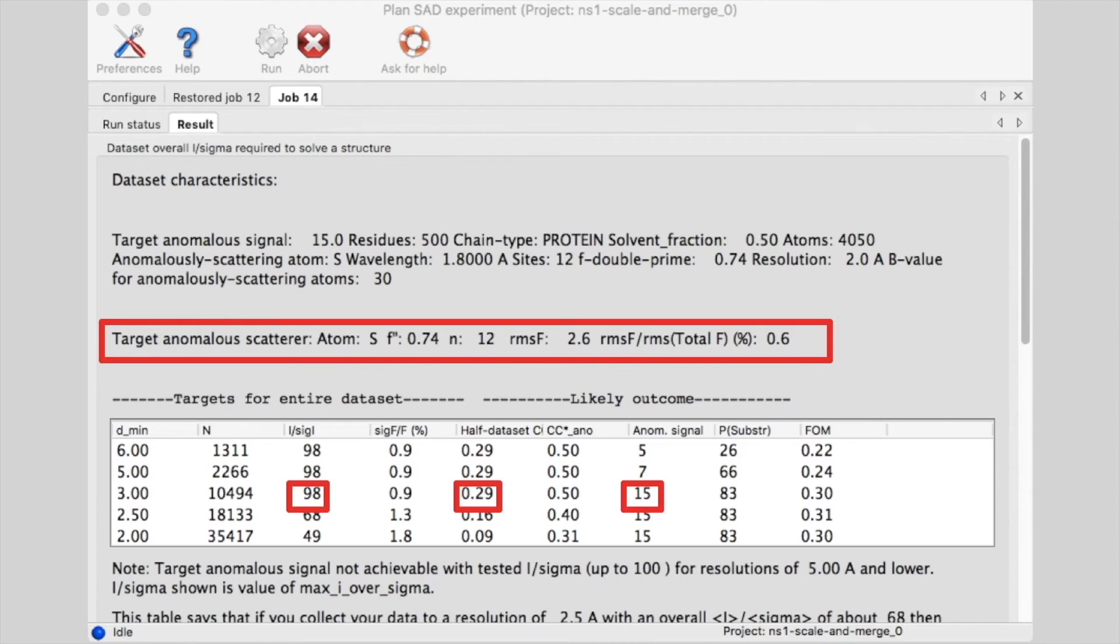Compare this with a required I over sigma of just 20 for the selenium experiment. The probability of solving the structure with this data is still 83%, and the expected figure of merit of phasing is 0.3.